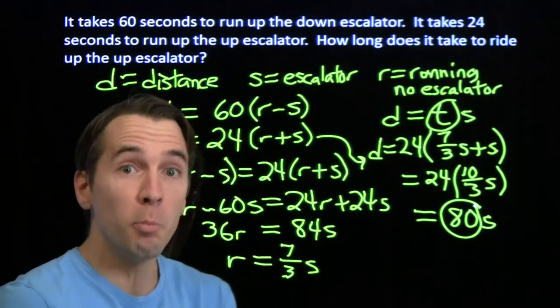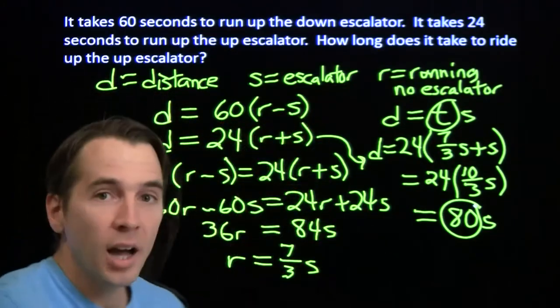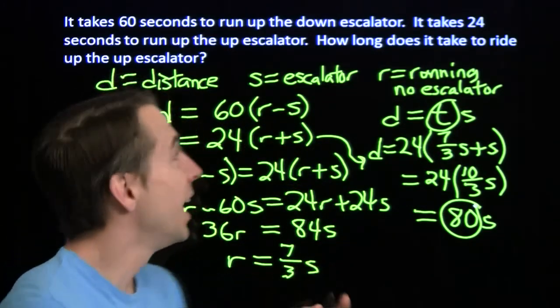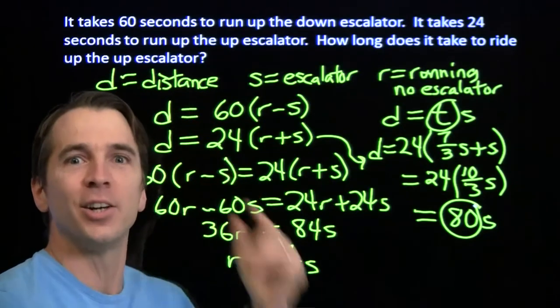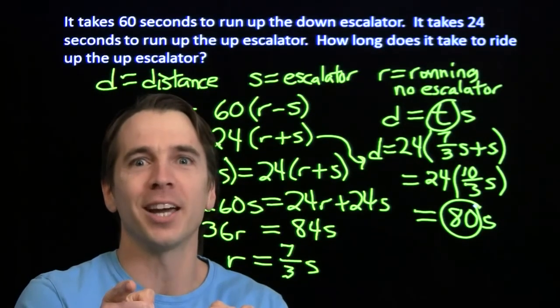So 80 seconds. That means while your mom is just riding up the up escalator and you're running up the down escalator, you're going to beat her there by 20 seconds.